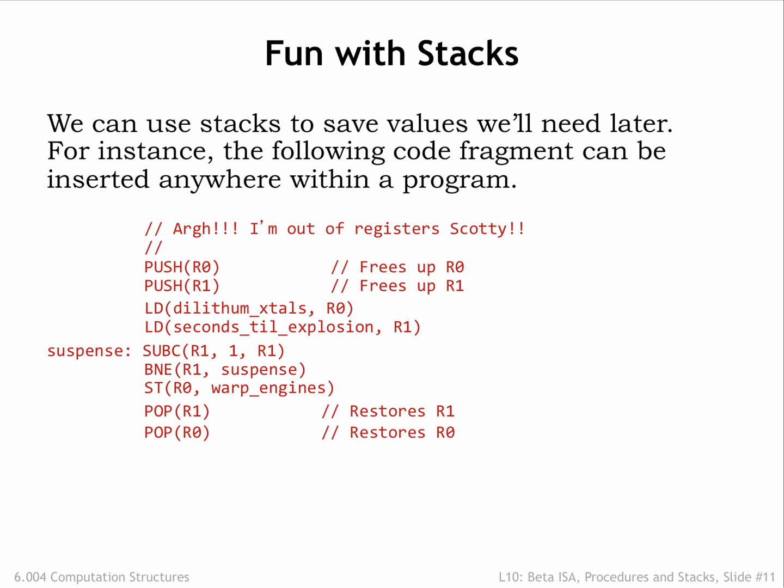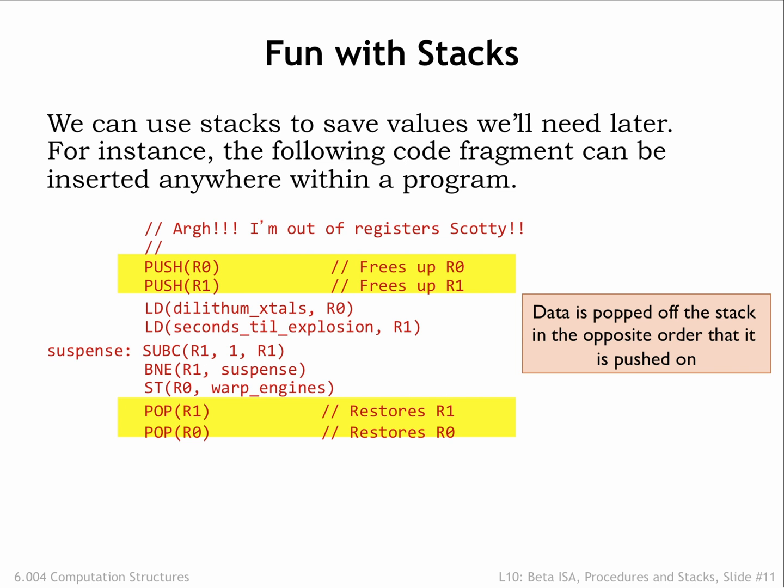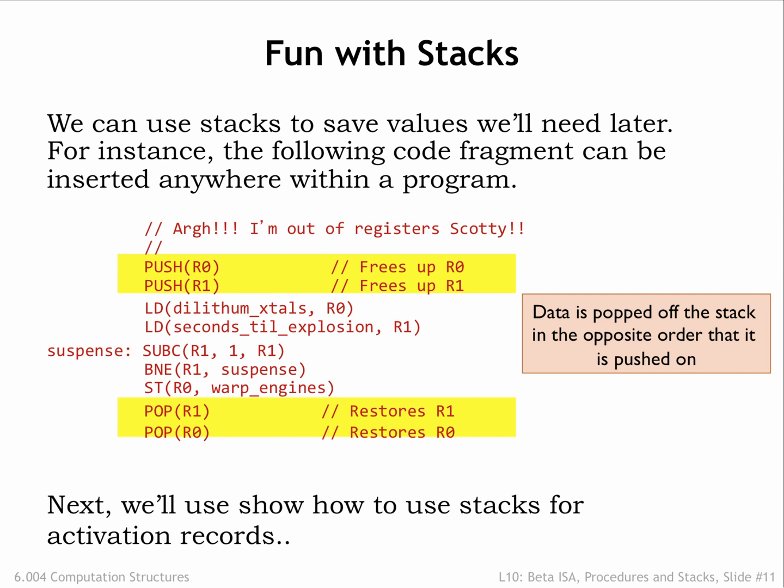We'll use stacks to save values we'll need later. For example, if we need to use some registers for a computation but don't know if the registers' current values are needed later in the program, we can push their current values onto the stack and then we're free to use the registers in our code. After we're done, we can use POP to restore the saved values. Note that we POP data off the stack in the opposite order that the data was pushed — we need to follow the last-in, first-out discipline imposed by the stack operations. Now that we have the stack data structure, we'll use it to solve our problems with allocating and deallocating activation records during procedure calls.